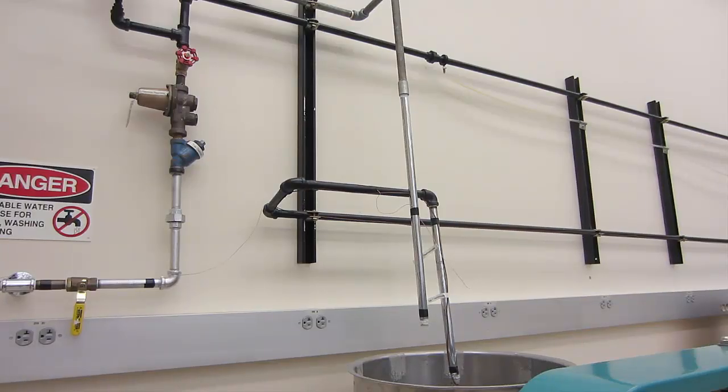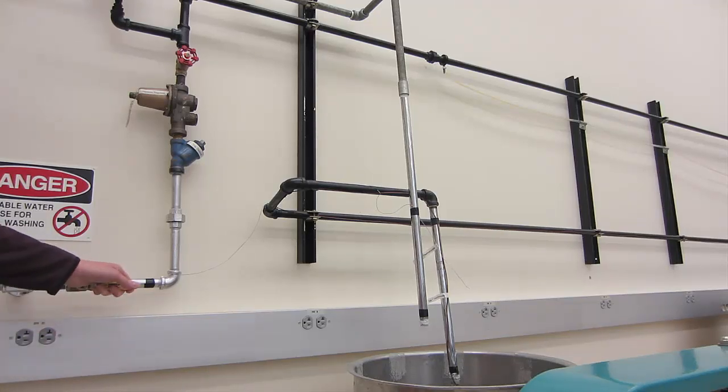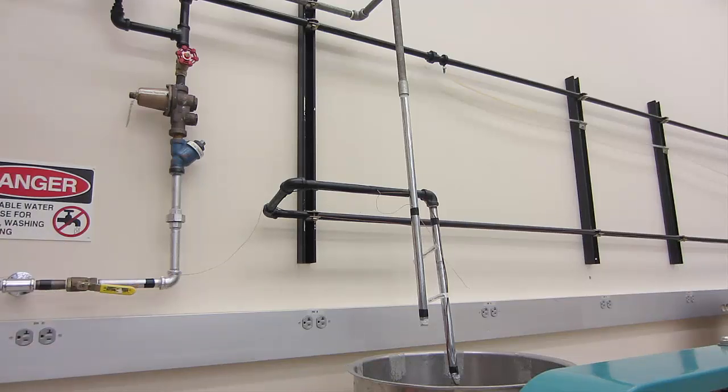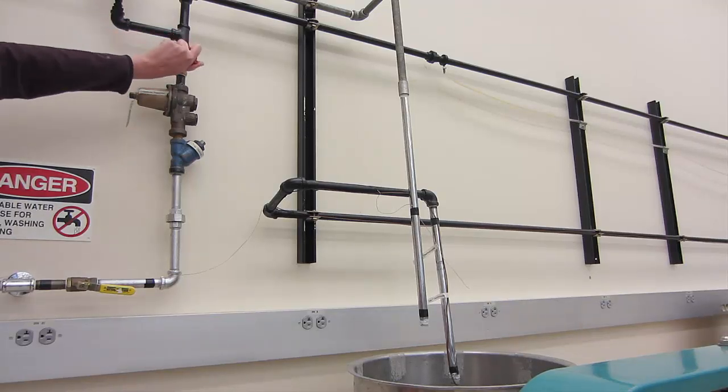Now we are going to start the flow of water. To do this, turn the on-off valve at the wall so flow is allowed into the pipe. Now we will want to adjust the flow to about 60 pounds per minute using the red valve labeled flow control valve.